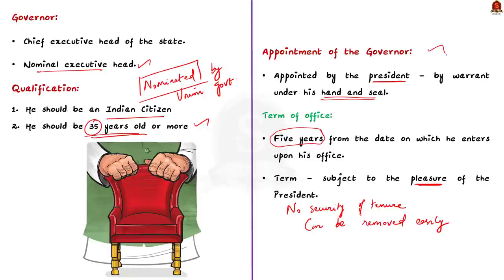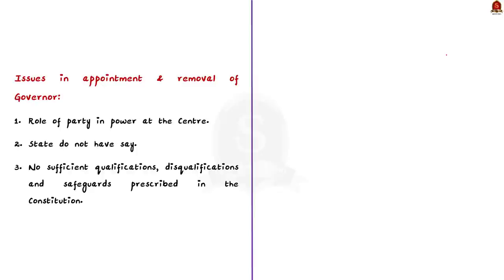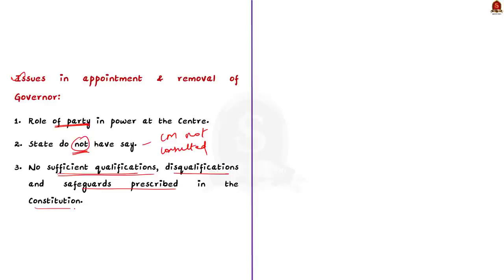The private bill identifies three broad issues with how governors are appointed under our constitution. First, governors are appointed and removed only by the president — meaning the party in power at the center can influence appointment and removal. Second, the state to which a governor is appointed has no say at all in the appointment or removal. Third, there are no sufficient qualifications, disqualifications, and safeguards prescribed in the constitution for appointing a person to this highest office in the state.